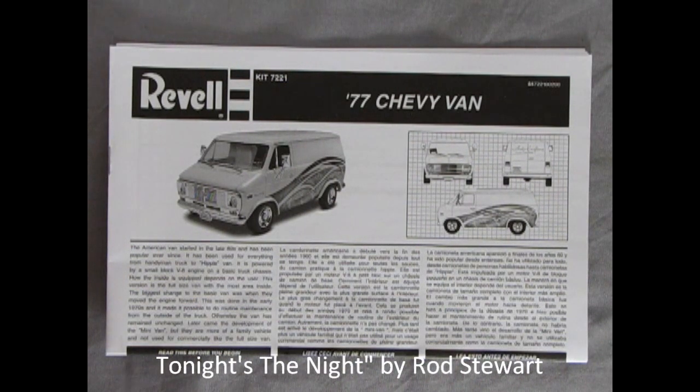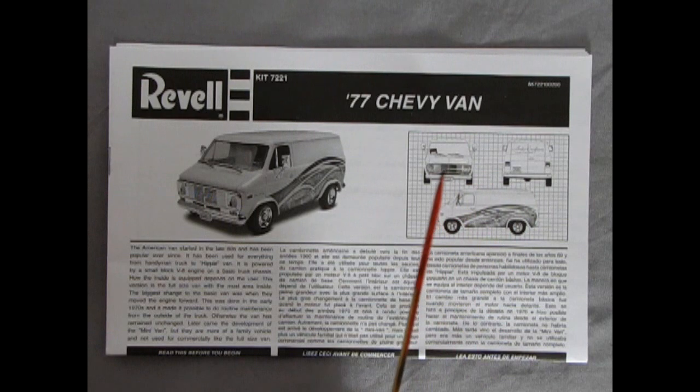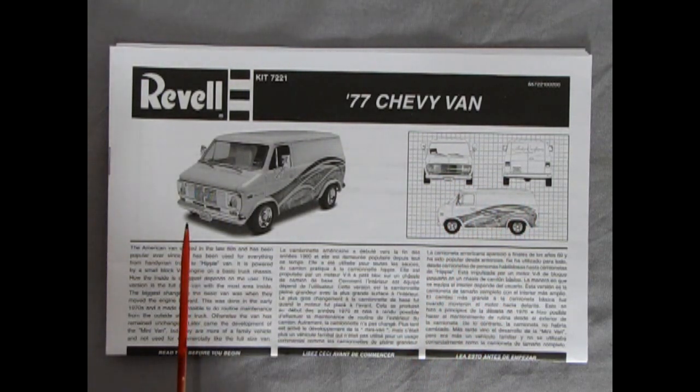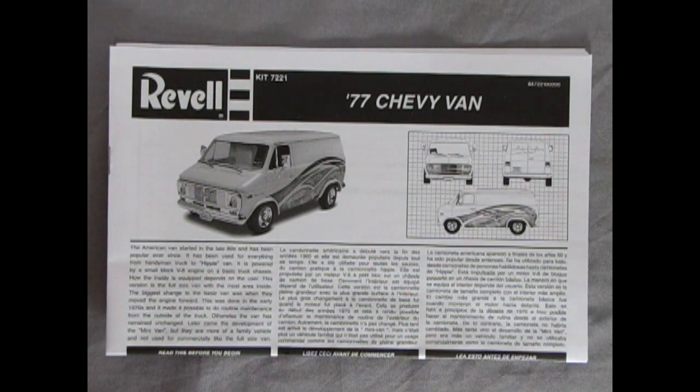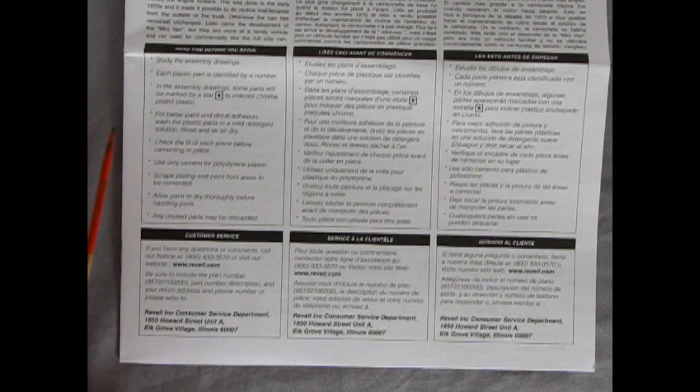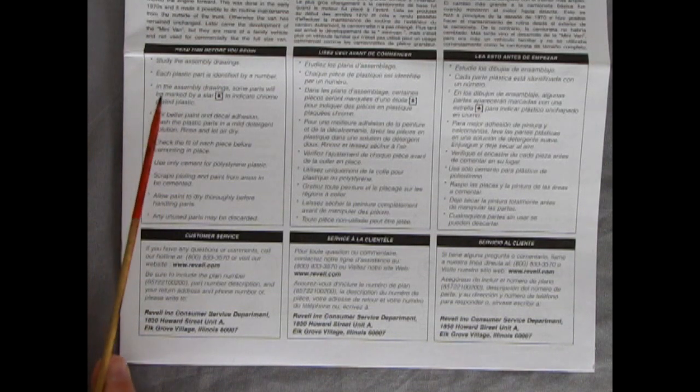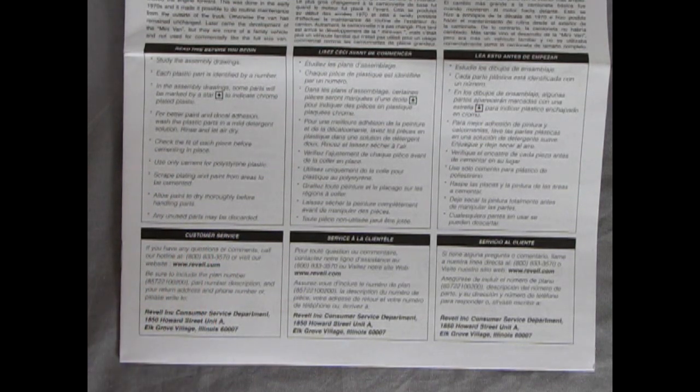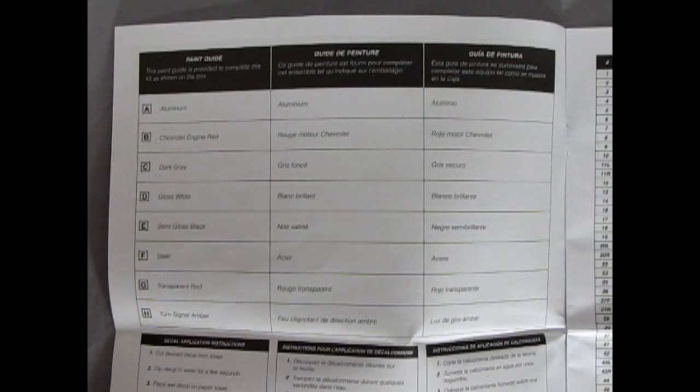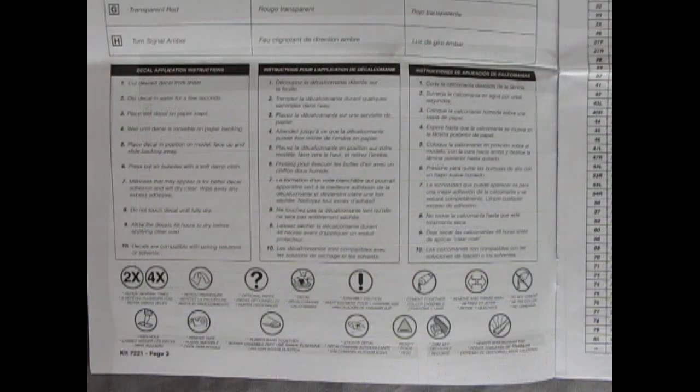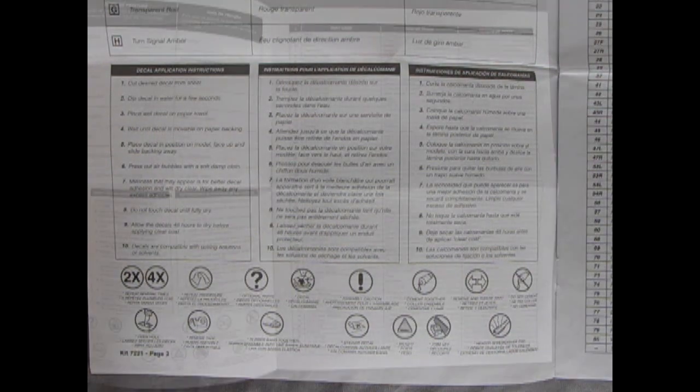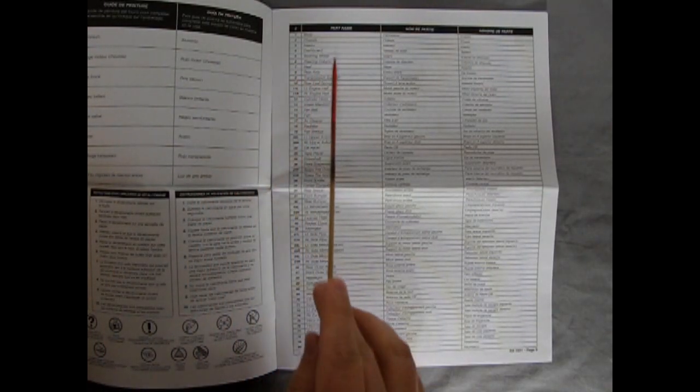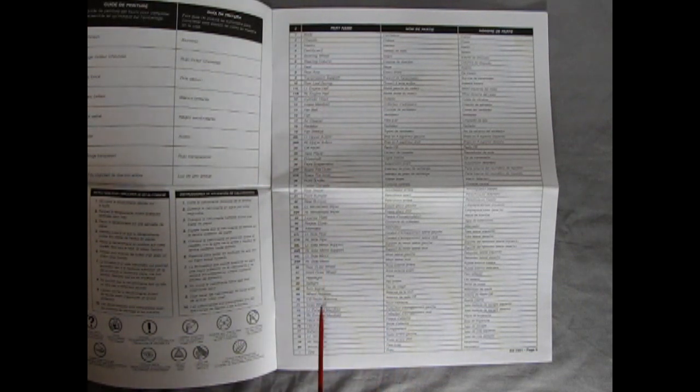Tonight's the night we're going to take a look at these great instruction sheets and as you can see here we have a blueprinted type sketch of the van as well as a photograph of the model kit and then a great history of how the American van started and what it was like in the 70s. Revell has also given us a few rules about this model kit such as study the assembly drawings, each plastic part is identified by a number and so on and so forth. Any unused parts may be discarded but hey we're all model builders we know that's a lie! Revell has also included this great big paint guide as well as instructions on our decal application and all the little symbols you will see inside the instructions. Now if you're missing any parts Revell has this entire chart of all the parts listed so that you can contact them and let them know which is missing.